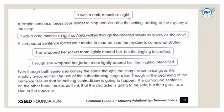"It was a dark moonless night" — a simple sentence forces your reader to stop and visualize the setting, adding to the mystery of the story. "It was a dark moonless night, so Anita walked through the deserted streets as quickly as she could" — a compound sentence forces your reader to read on, but the mystery is somewhat diluted because of the combination of two sentences.